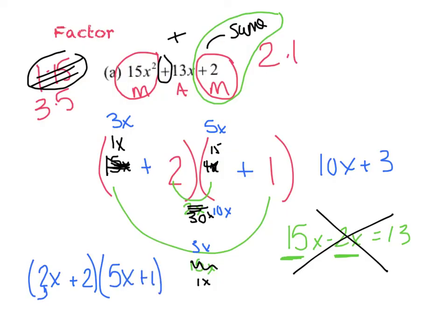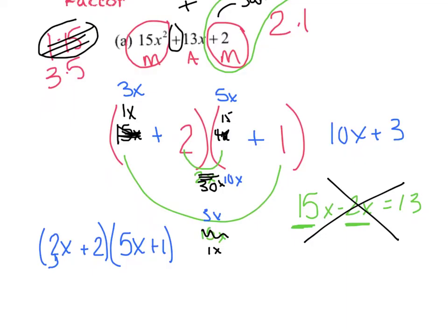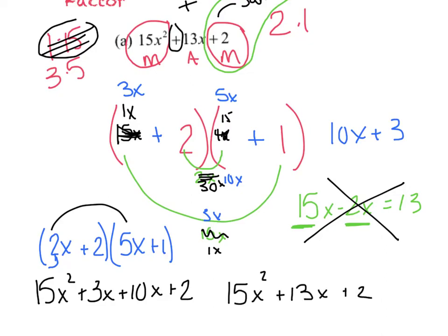And if you're ever uncertain if you're right, all you have to do is FOIL that out and see if you got what you started with. So if I FOIL, I get 15x squared plus 3x plus 10x plus 2 gets me 15x squared plus 13x plus 2. And by golly, that's exactly what I started with.